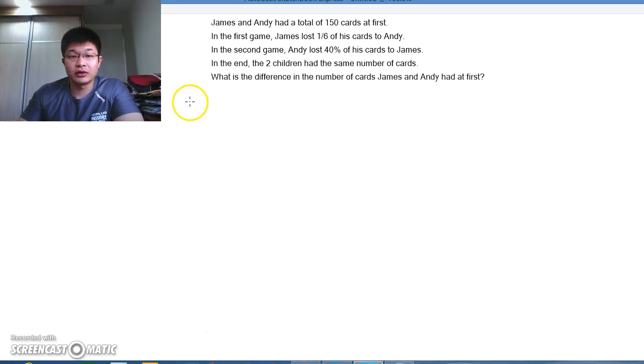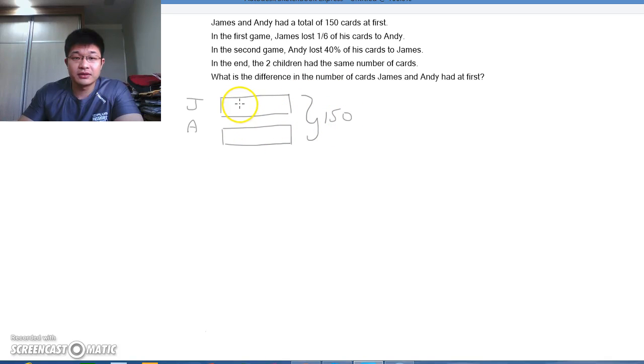and let us start by drawing what happens at the end. So we know that James and Andy, they have the same amount of cards, and it's just basically for illustration purpose. And this is a 350, so this would definitely be 75 and 75.